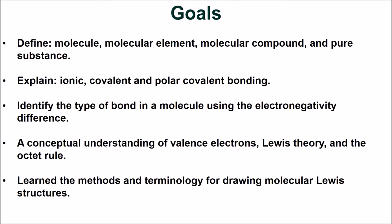We have now covered the basics of bonding between atoms. You should be able to define molecule, molecular element, molecular compound, and pure substance. You should be able to explain ionic, covalent, and polar covalent bonding, as well as identify the type of bond in a molecule using the electronegativity difference. You should have a good conceptual understanding of valence electrons, Lewis theory, and the octet rule, and have learned the methods and terminology for drawing molecular Lewis structures. Be sure to watch the videos detailing how to draw Lewis structures before attempting the problem set for this section.